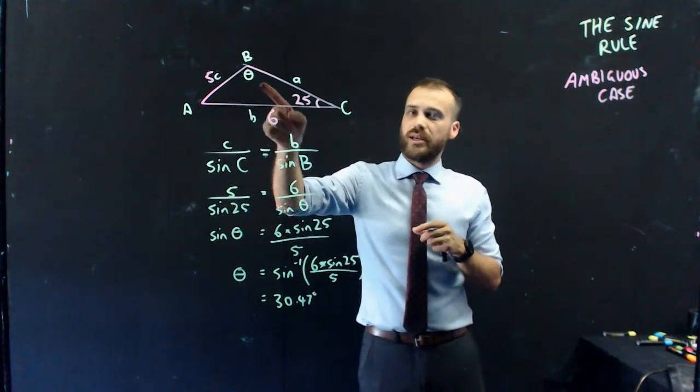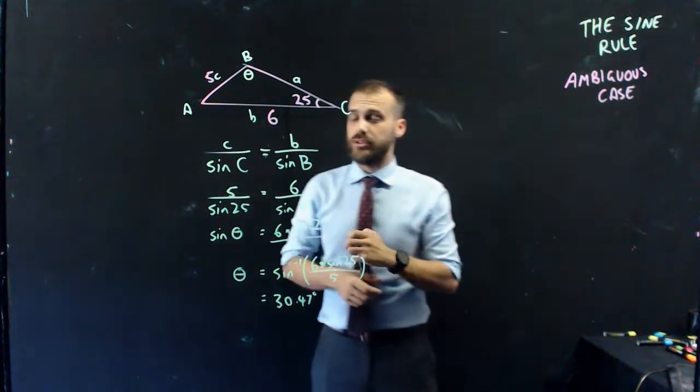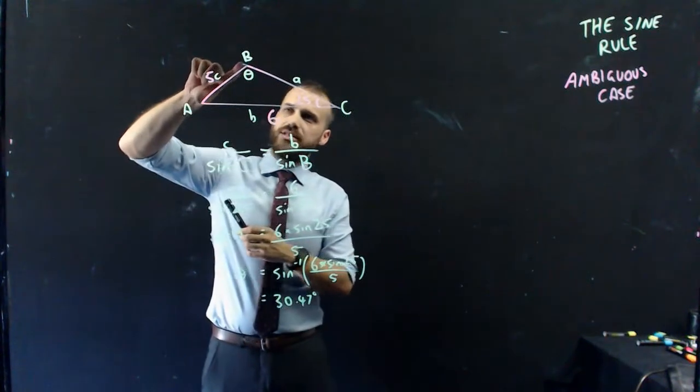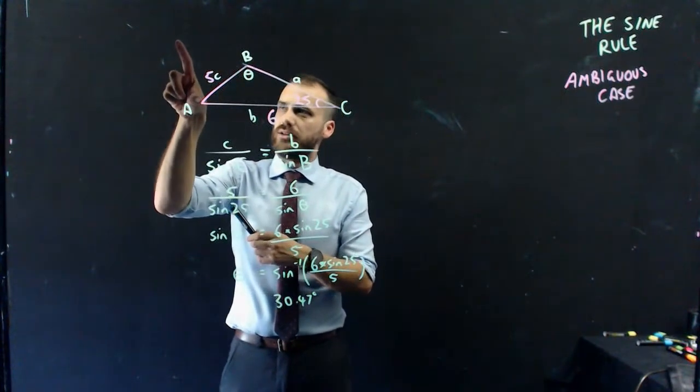Well, it's because I'm finding that angle, but not in that particularly drawn triangle. Because believe it or not, if I take this 5 and pivot it around A, like that.